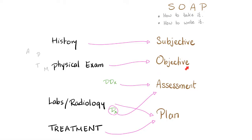After this, and only after this, you start formulating your differential diagnosis. A patient says they're tired — this could be anemia, fibromyalgia, depression, or hypoglycemia, etc. Then you order labs and radiology, confirm your diagnosis, and then you start the plan.